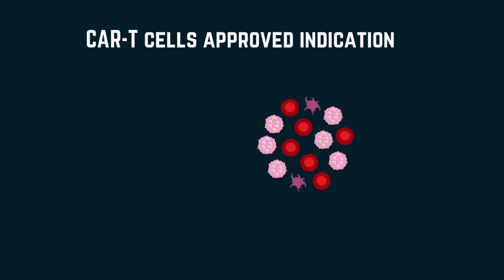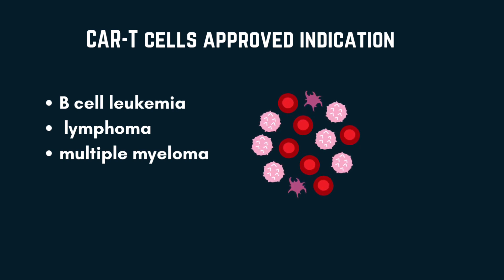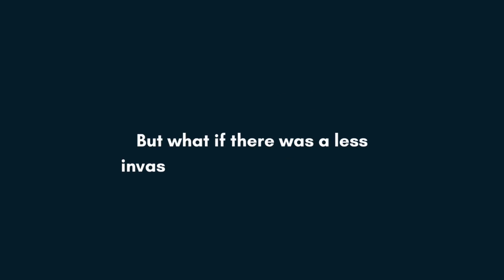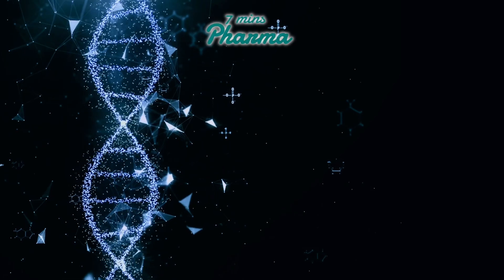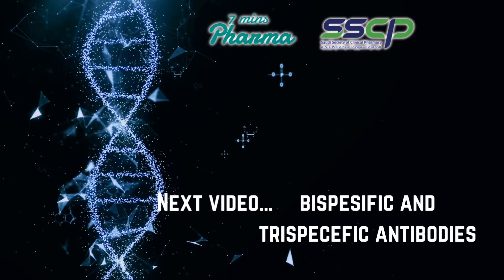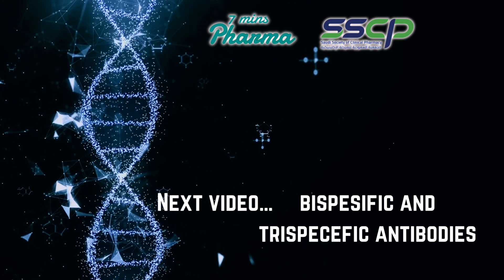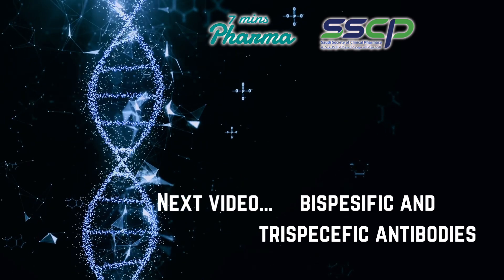There are different CAR T cell-based therapies approved to use against blood cancers, particularly B cell leukemia, lymphoma, and multiple myeloma. CAR T cells are incredible, and the immunity against cancer can last for a long time because of memory T cells. But what if there was a less invasive way to achieve similar results? That's what we'll talk about in the next video — antibodies. Not only the most well-known monoclonal antibodies, but bispecific and trispecific antibodies, which can tackle not just cancer but a range of other diseases.